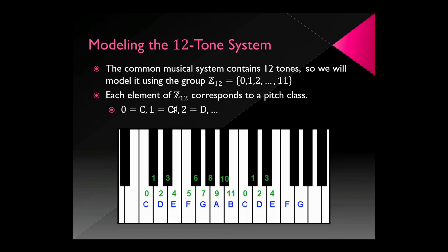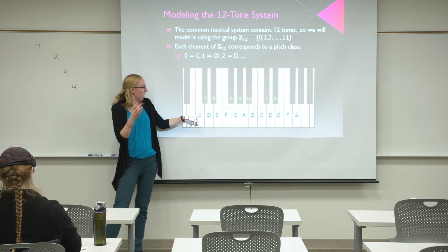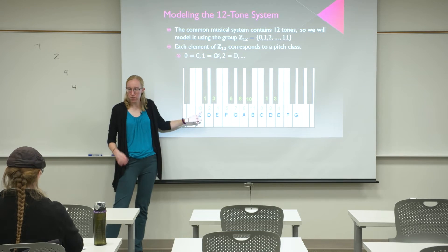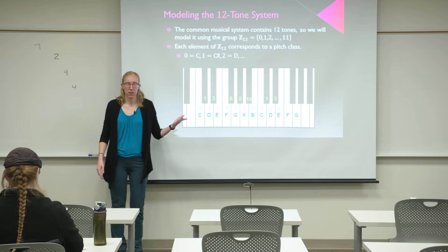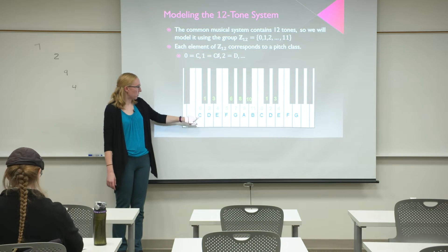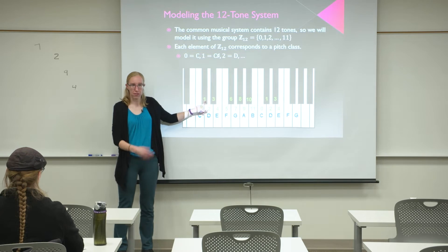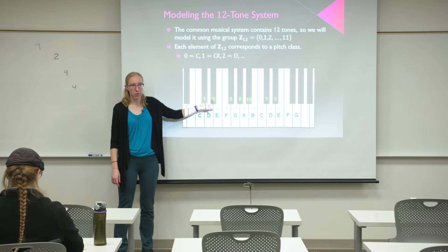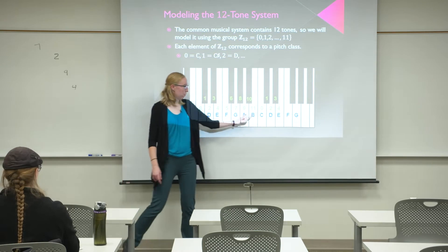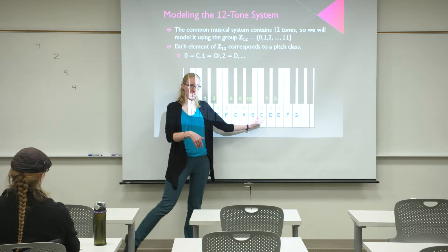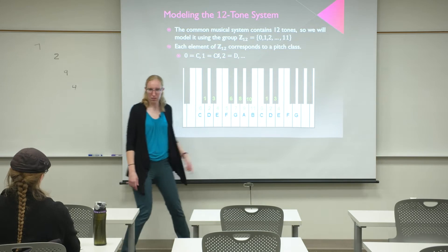What does it have to do with math? Our musical system has 12 notes, 12 tones, so we model it using the cyclic group Z12. We make each number in our group match one of our notes. I chose to make zero equal C because C major's the easiest, but there's no particular mathematical reason. So C is 0, C-sharp or D-flat is 1, D is 2, D-sharp or E-flat is 3, and so on. When we get to 11 at B, we start over at zero — back to C.